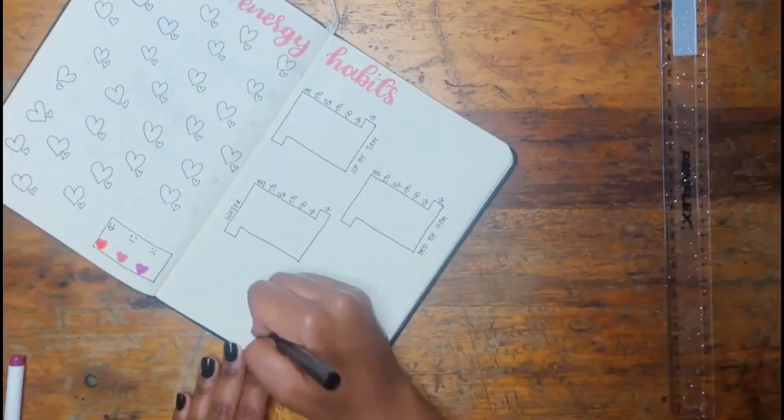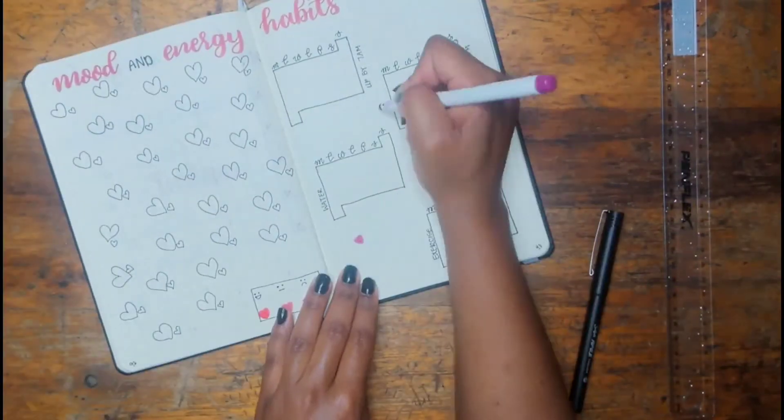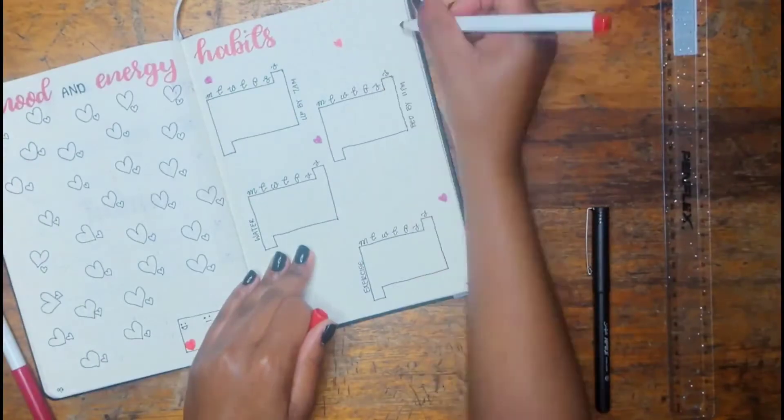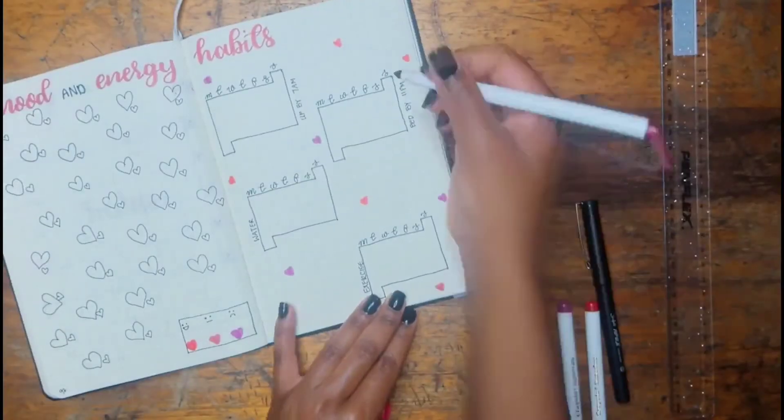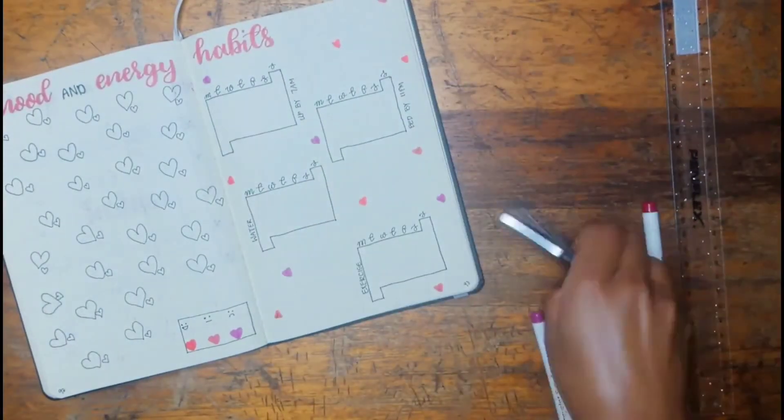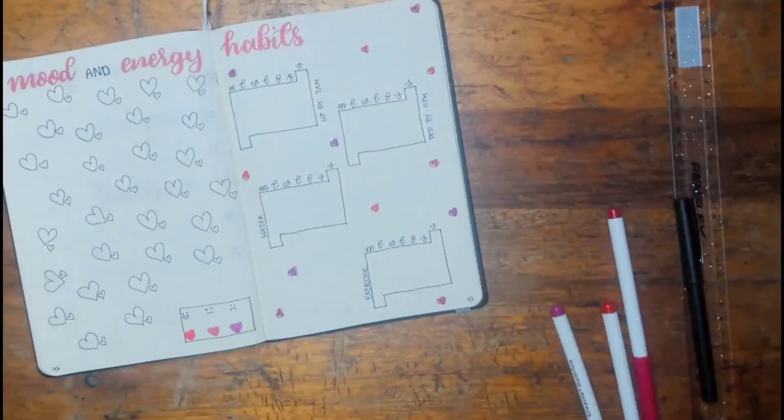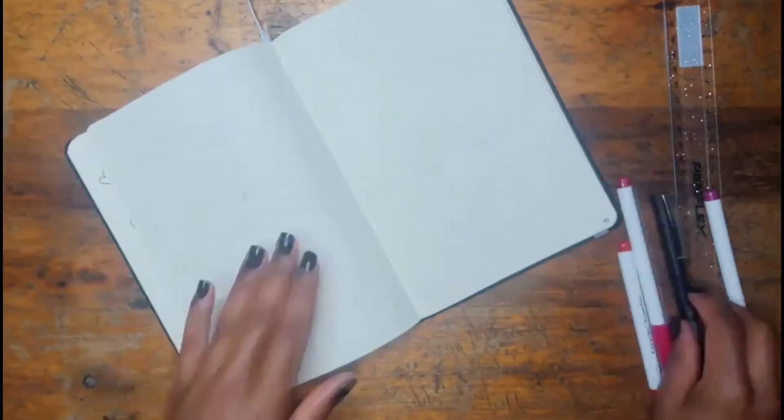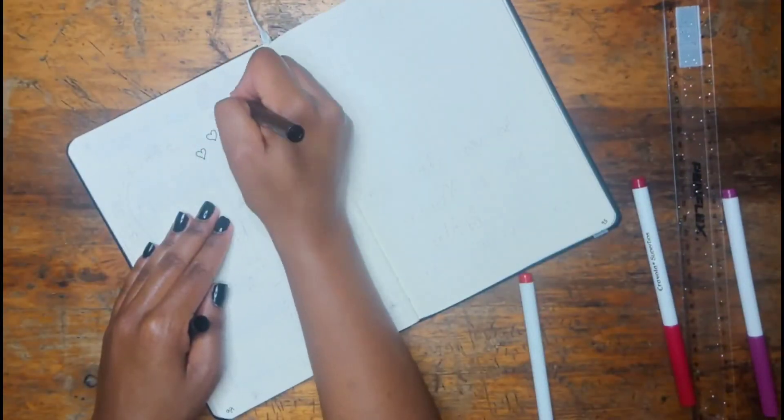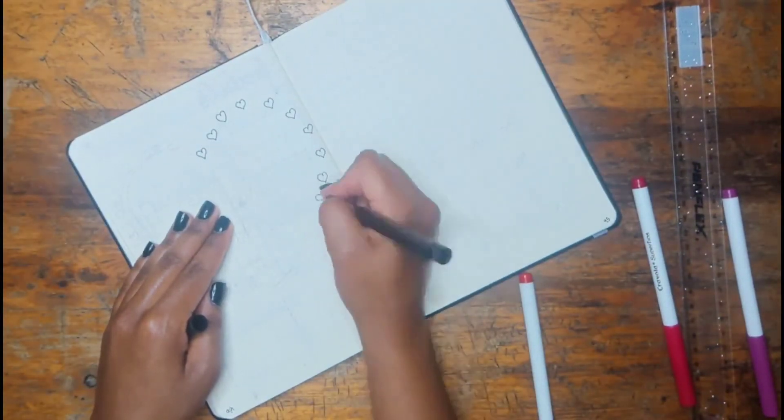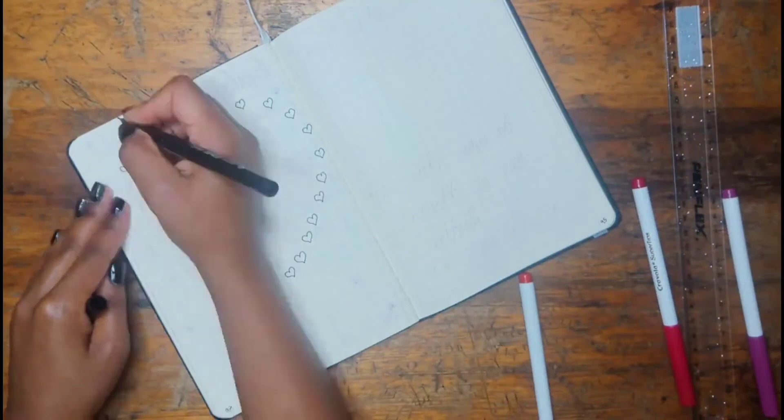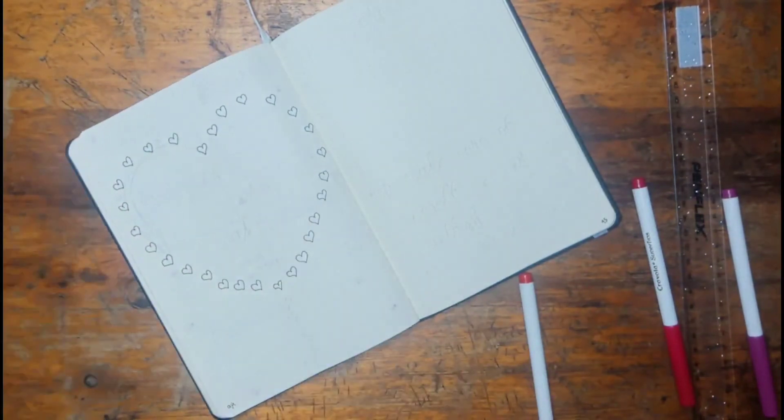I wanted to make it a little easier on myself so that I can really dial in and work on the very important habits and then I could add some more habits later. The habits I'm tracking are waking up by 7 a.m. and being in bed by 11 p.m., also water, I need to drink lots of water, and also exercise, even though I don't really exercise every day.